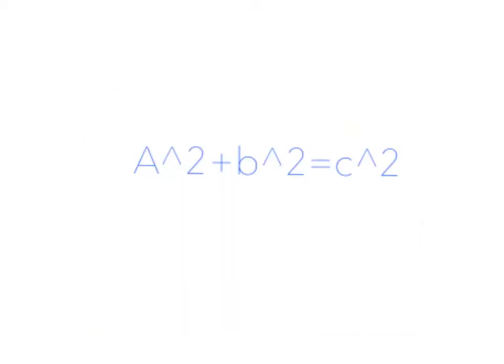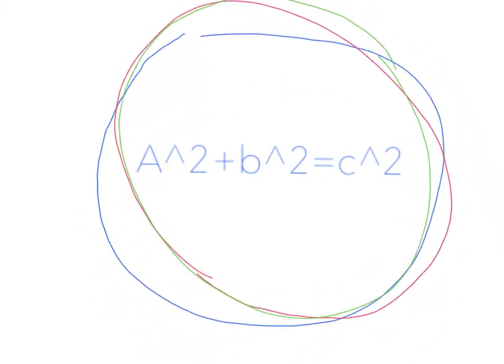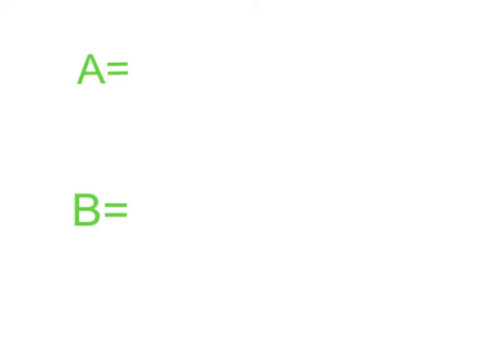This is the equation that will help you find it all. Now all you have to do is plug in the numbers. A and B are the two sides in the Pythagorean Theorem triangle that we did at the beginning. A is going to be our base on the triangle, and that was five. And B is going to be on the right side of the triangle, which is two.